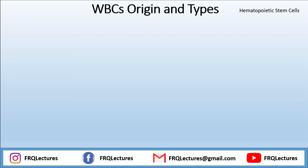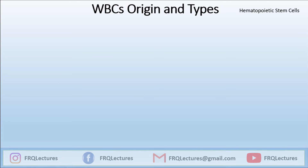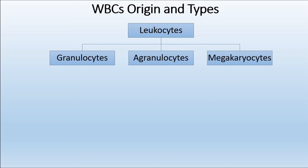If we talk about leukocytes or WBCs, there are granulocytes, agranulocytes, and megakaryocytes. Megakaryocytes disintegrate into fragments known as platelets, which play a role in wound healing and blood clotting. My main focus will be on granulocytes and agranulocytes.